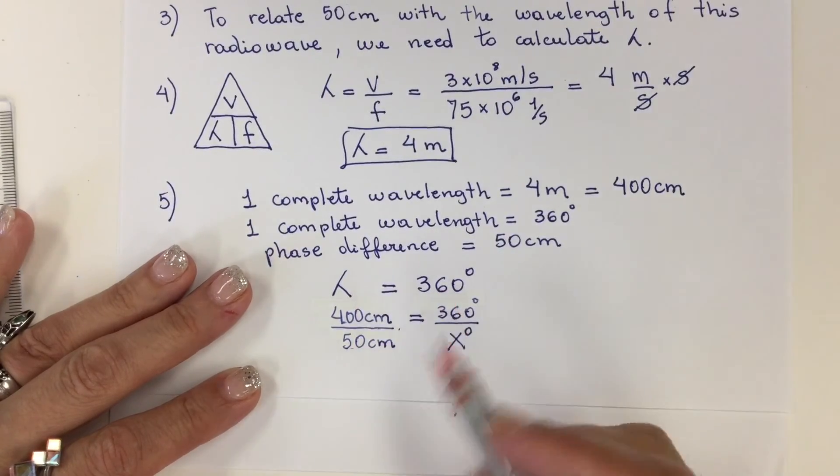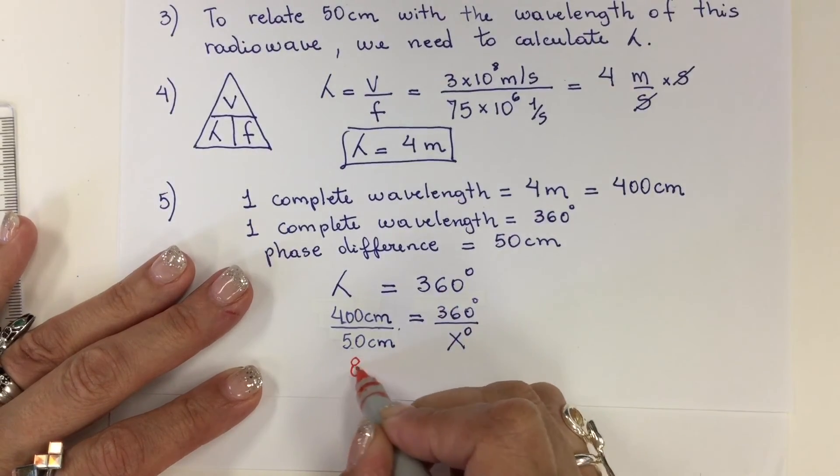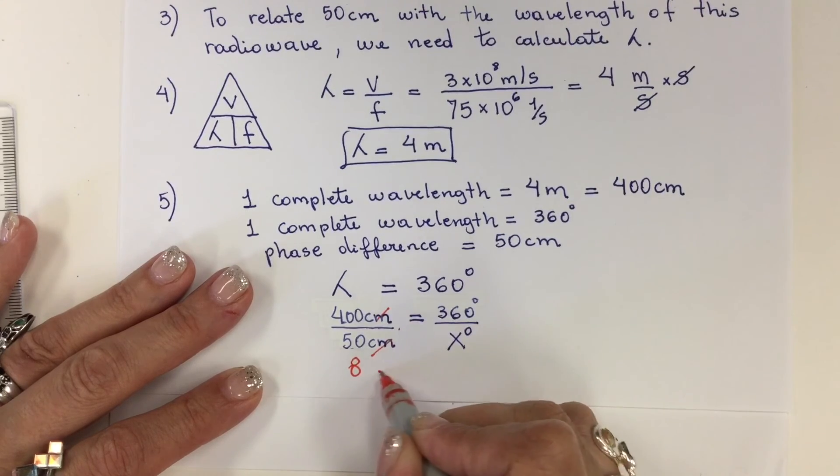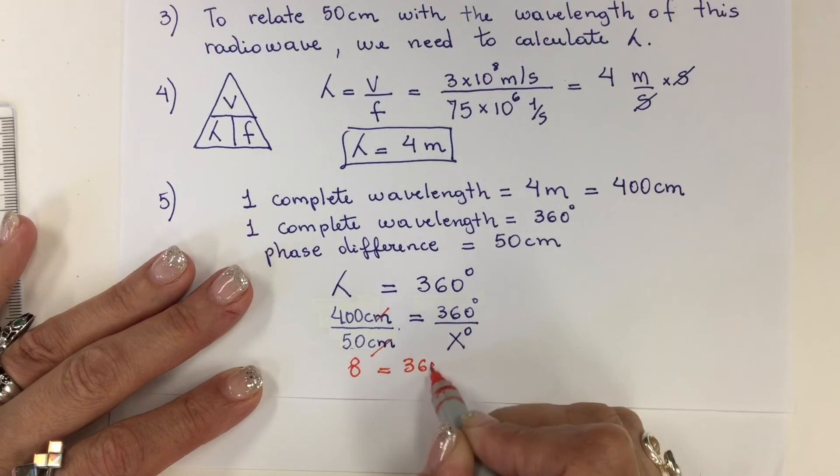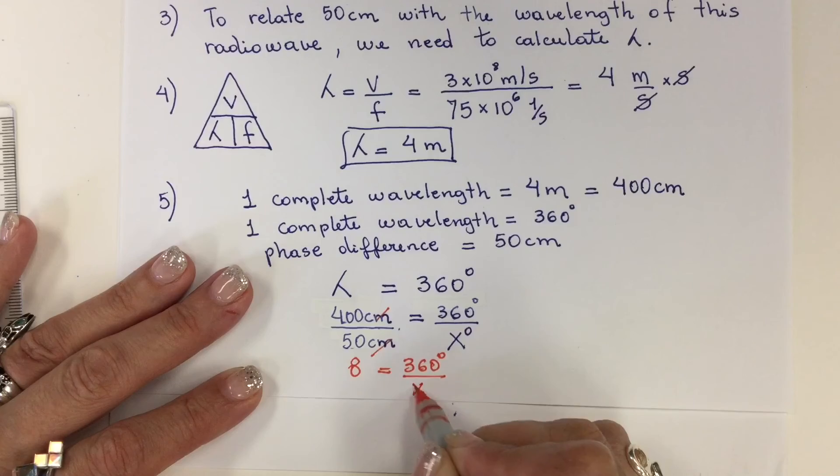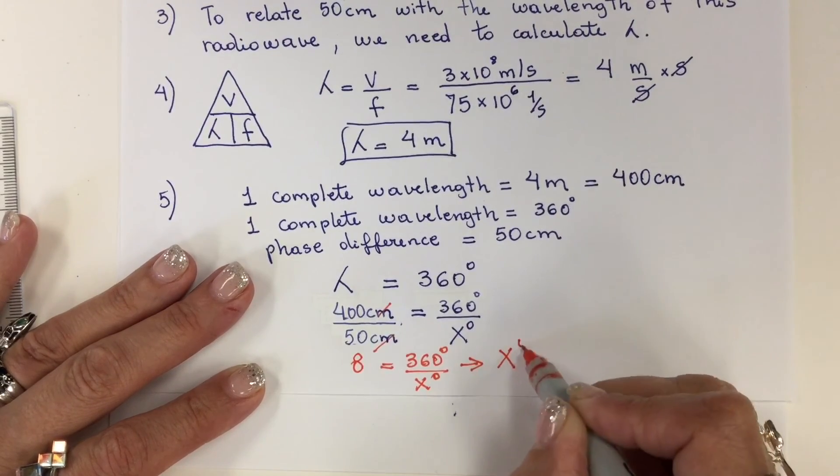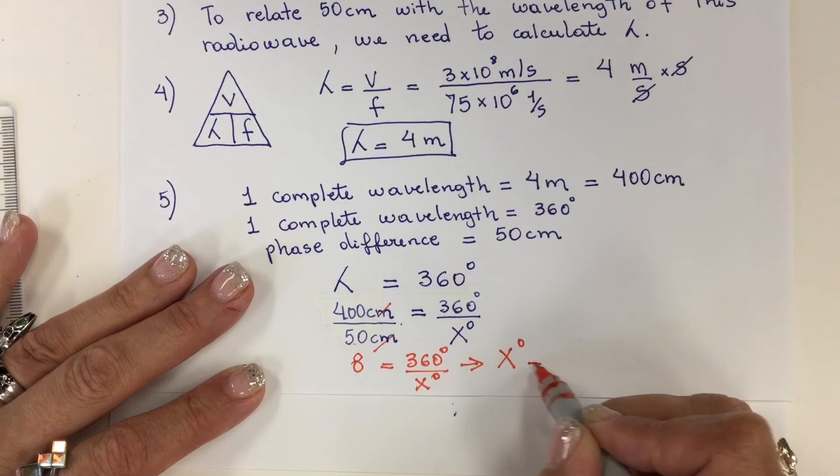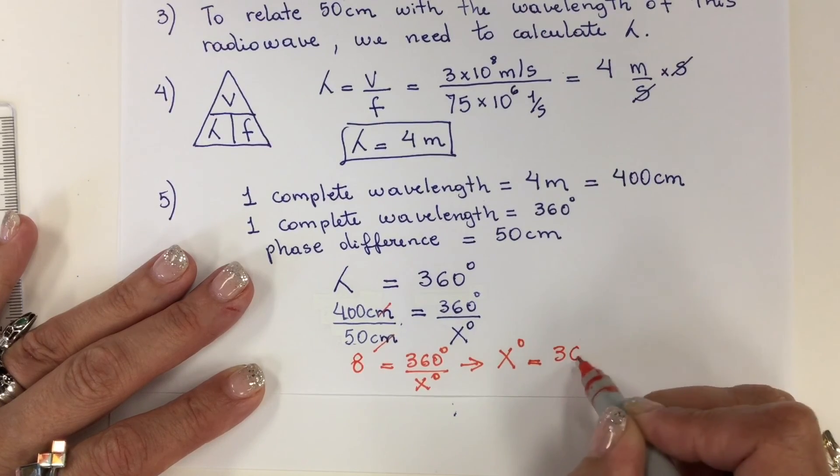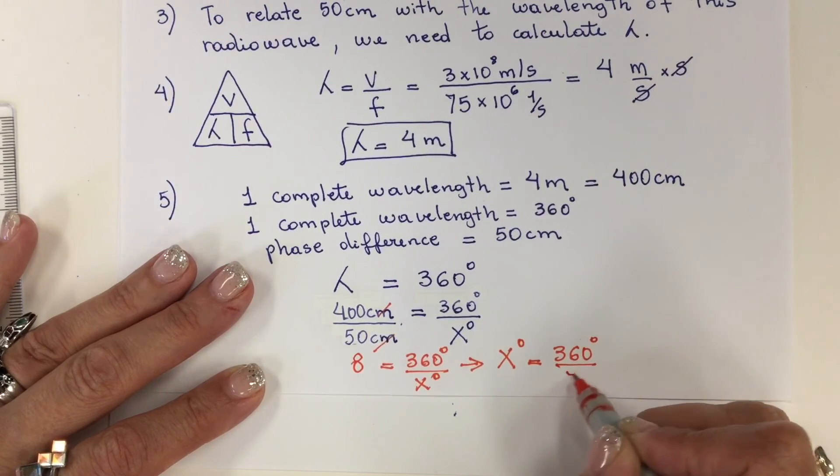400 divided by 50 is 8. Centimeters cancel, which equals 360 degrees over the value that I want to find. So my phase difference in degrees is 360 divided by 8.